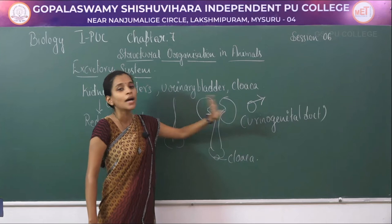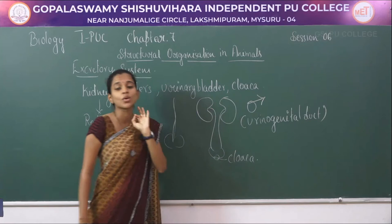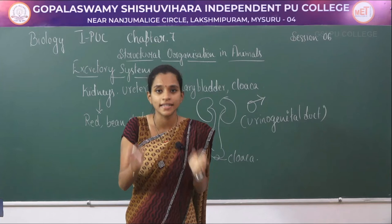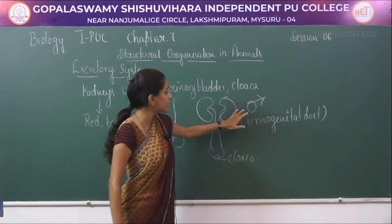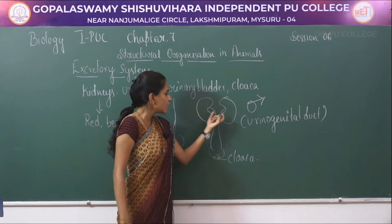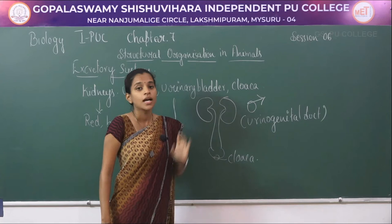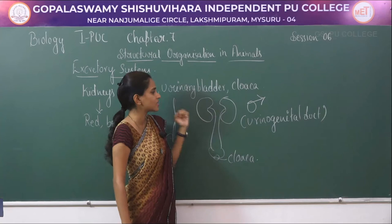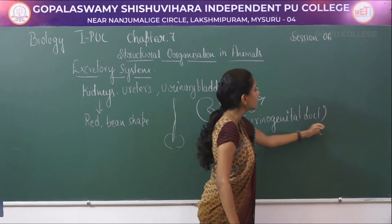In female frogs, the ureter carries only urine. There is a separate duct called the oviduct to carry the eggs. In females it is an independent structure, whereas in males the ureter performs two functions — that is why it is called the urinogenital duct.